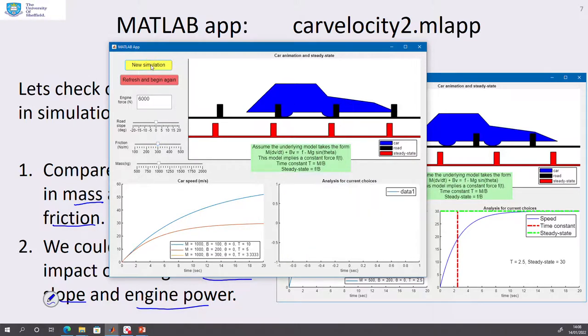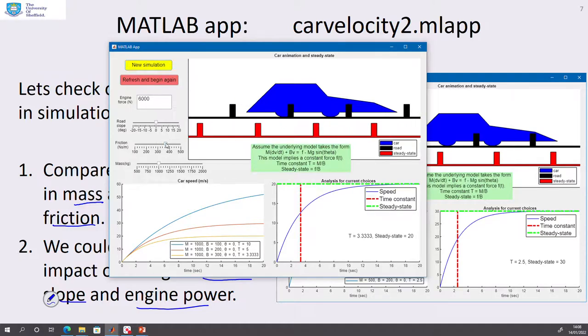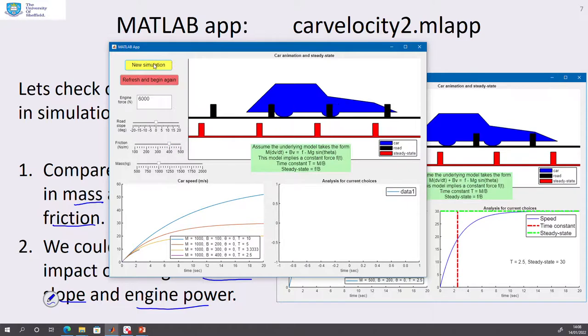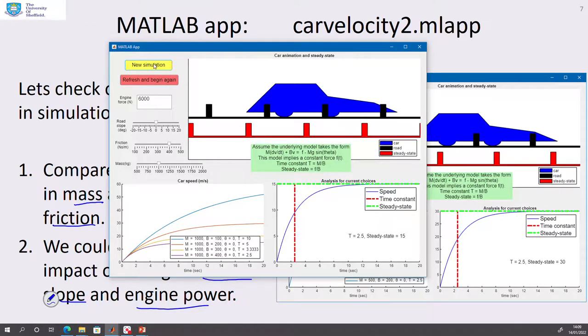So let's now take it to 300. And you can see again, the steady state speed is now getting slower as friction gets bigger. And again, the time constant is getting faster. So I could go to 400. And you will see the same pattern again. The steady state is getting slower, the time constant is getting faster. OK, so next, what we might want to do is say, what would happen if I changed the road slope?